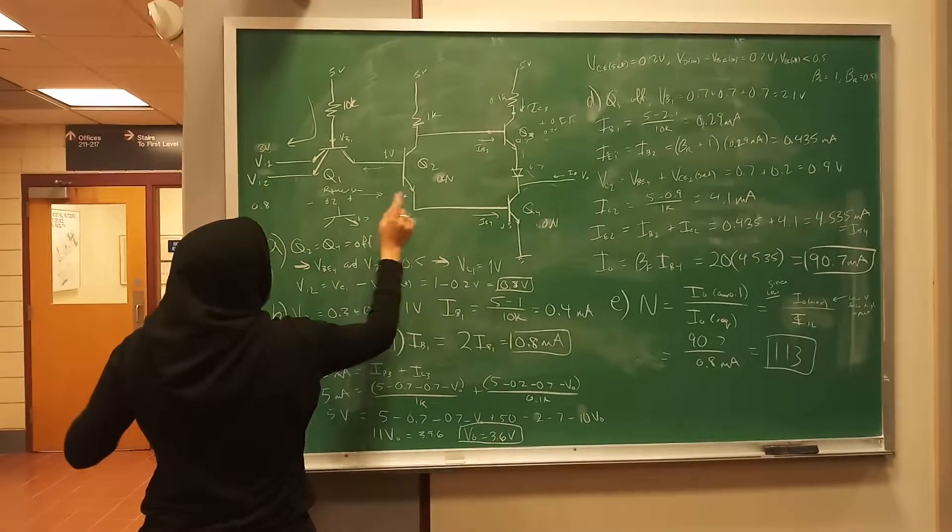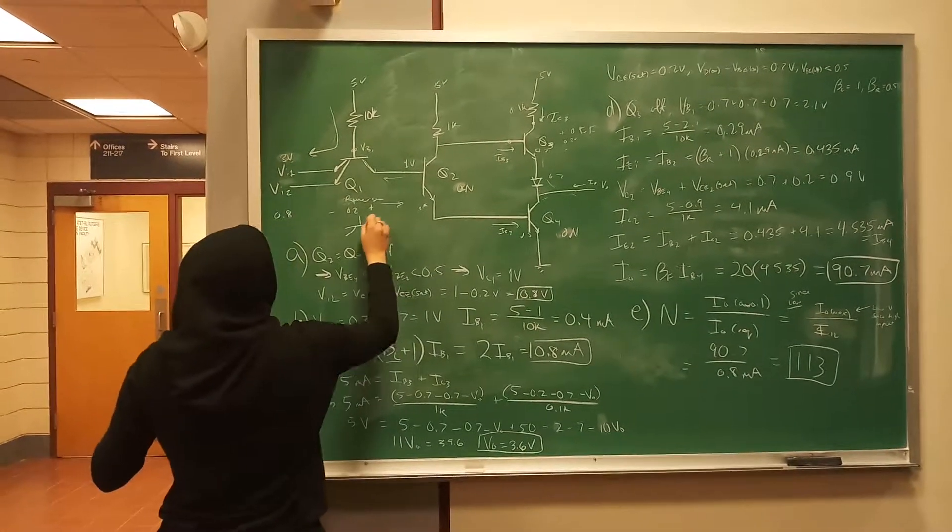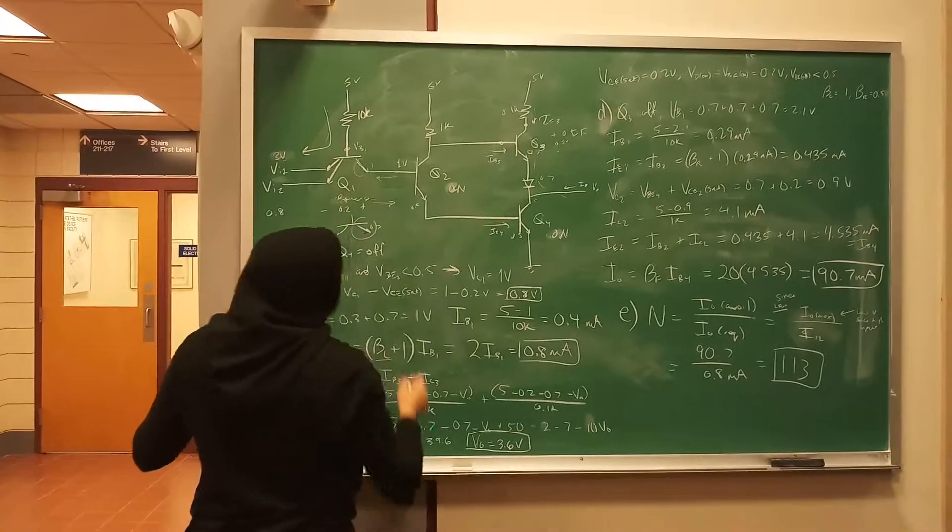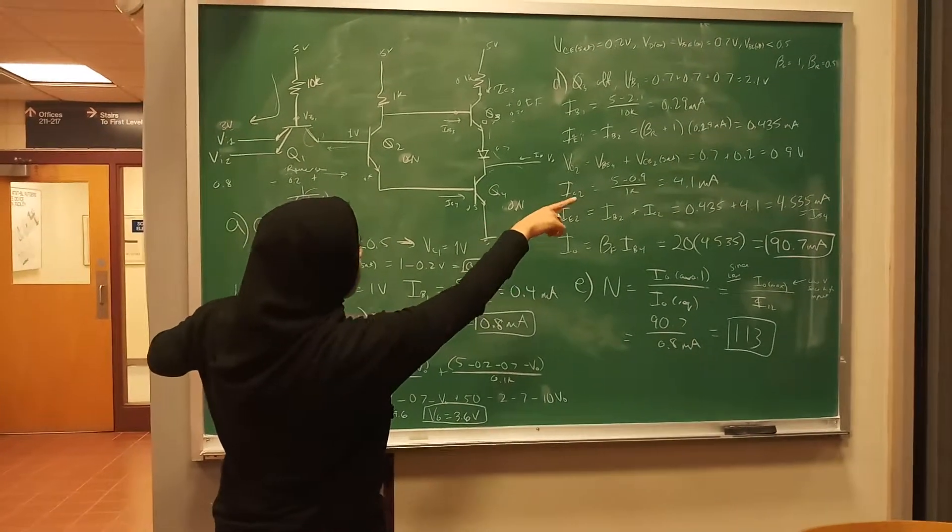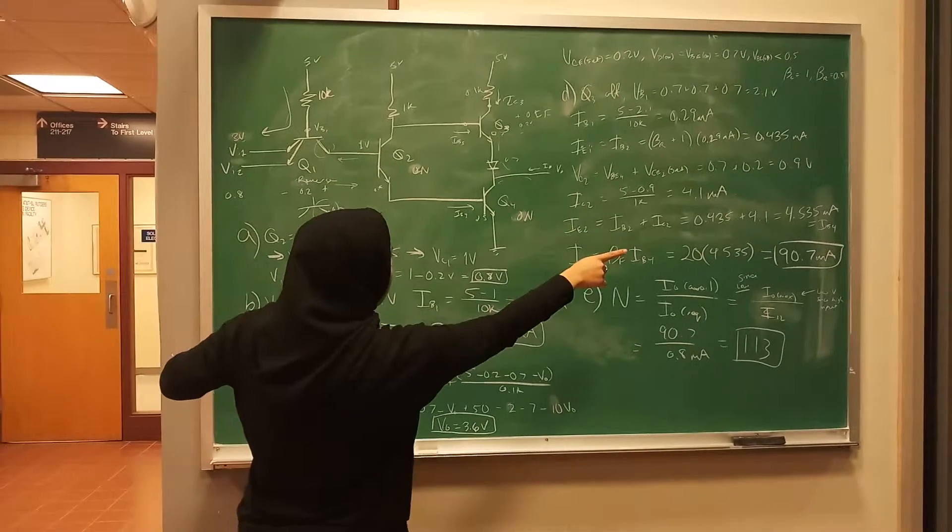So now I_E1, which is in parentheses, because I'm talking about this E, which is actually typically I_C. So you say, is beta reverse times I_B1 is equal to 0.435 milliamps.